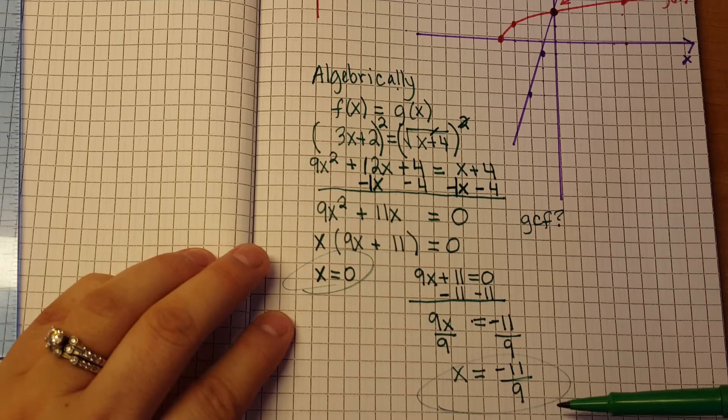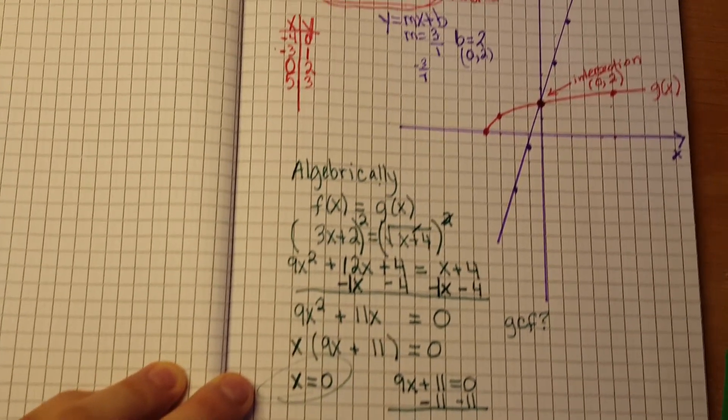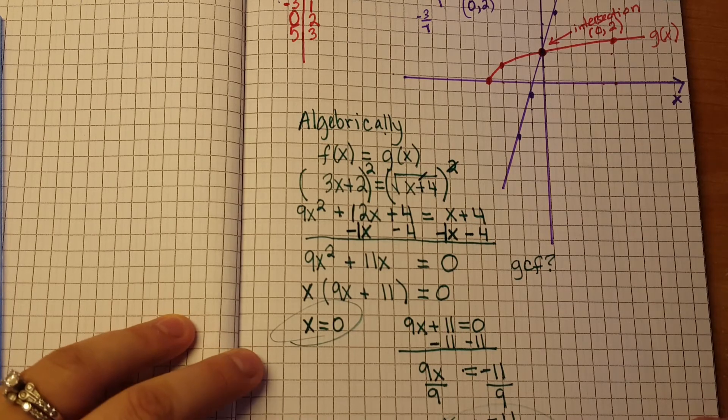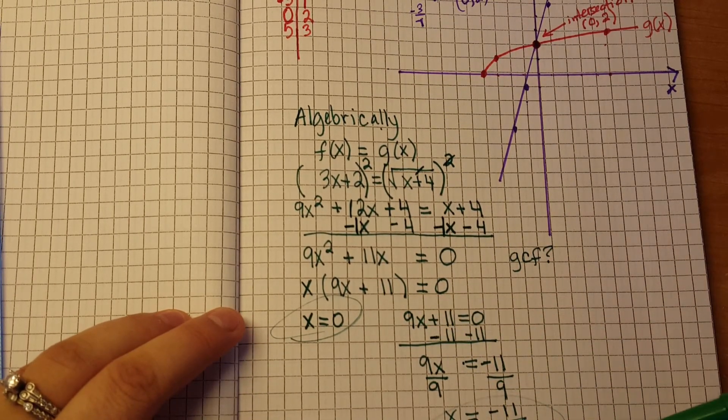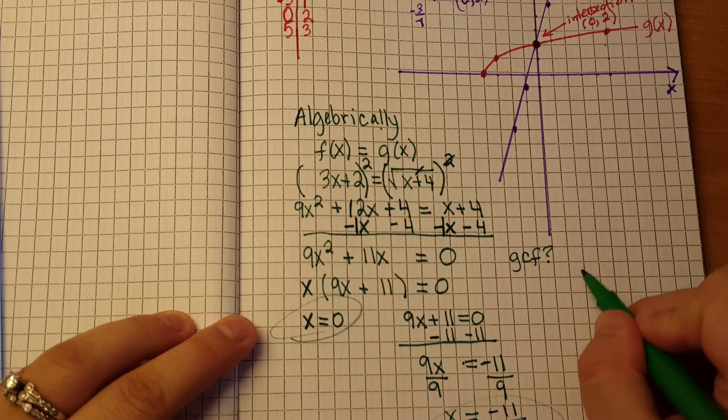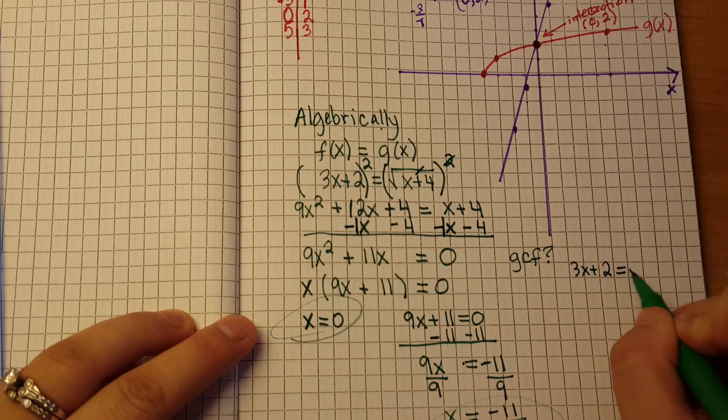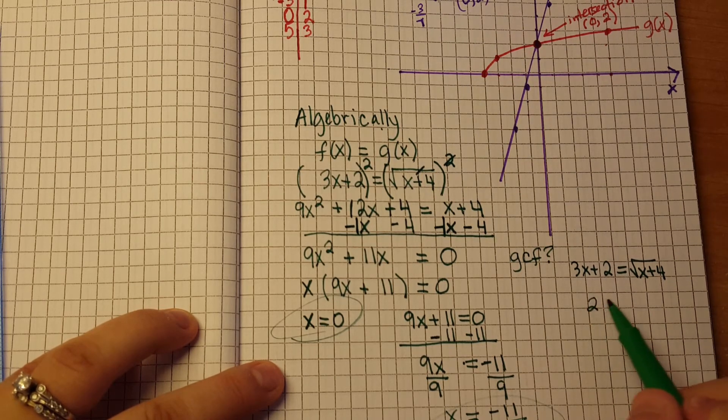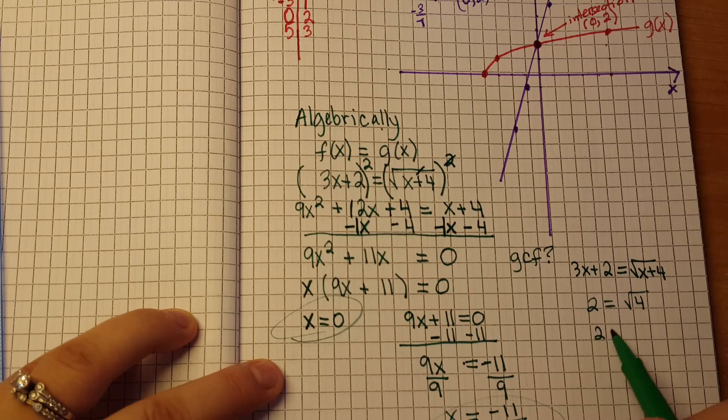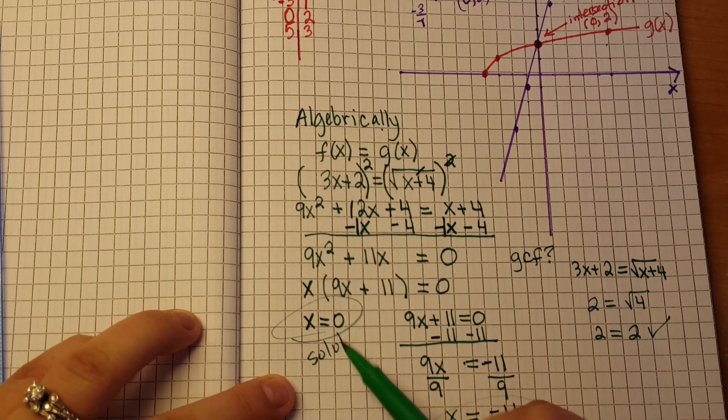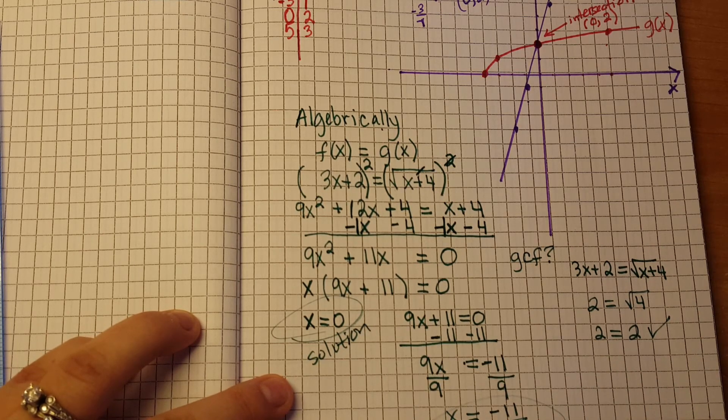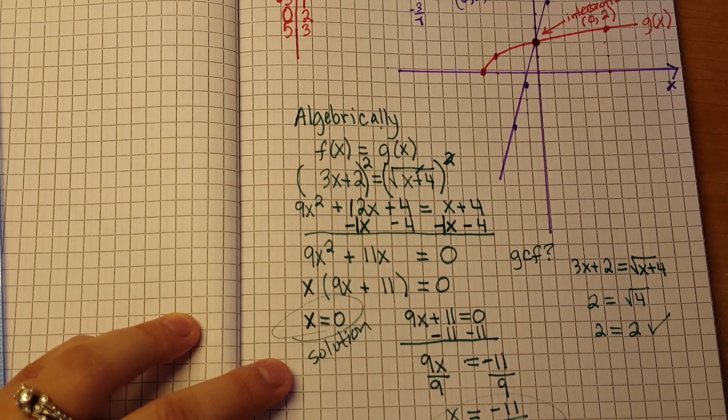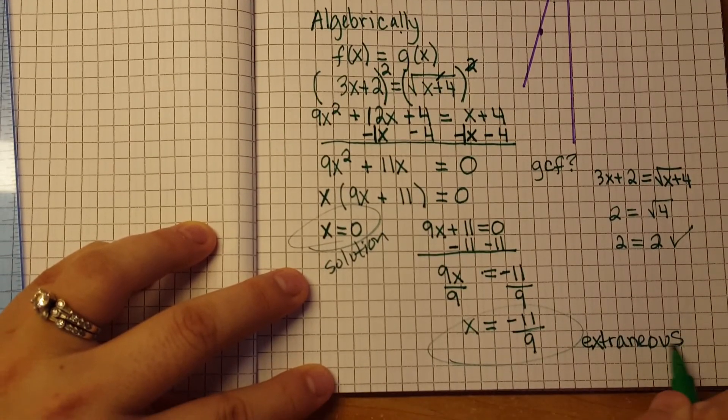This indicates that it intersects at 2 different points. But clearly from our previous example, we only have 1 intersection. Which means that 1 of these answers is an extraneous answer. And we also could check that by plugging both of them in and seeing if it holds. So remember your equation is 3x plus 2 is equal to the square root of x plus 4. If you plug in 0, that gives us 2 is equal to the square root of 4, or 2 is equal to 2. So we know that this is a solution. If we plug in negative 11 over 9, it's not going to work. So this is, what is our special name for something that does not work? You guessed it, that is our extraneous solution.